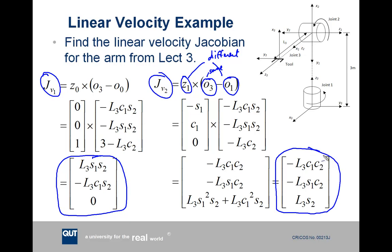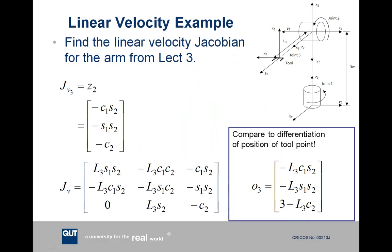So those are the first two columns of our linear velocity Jacobian. The only one we've got left to do is the component contributed by joint number 3, which is our prismatic linear translation joint. The prismatic joint 3 is a lot easier.